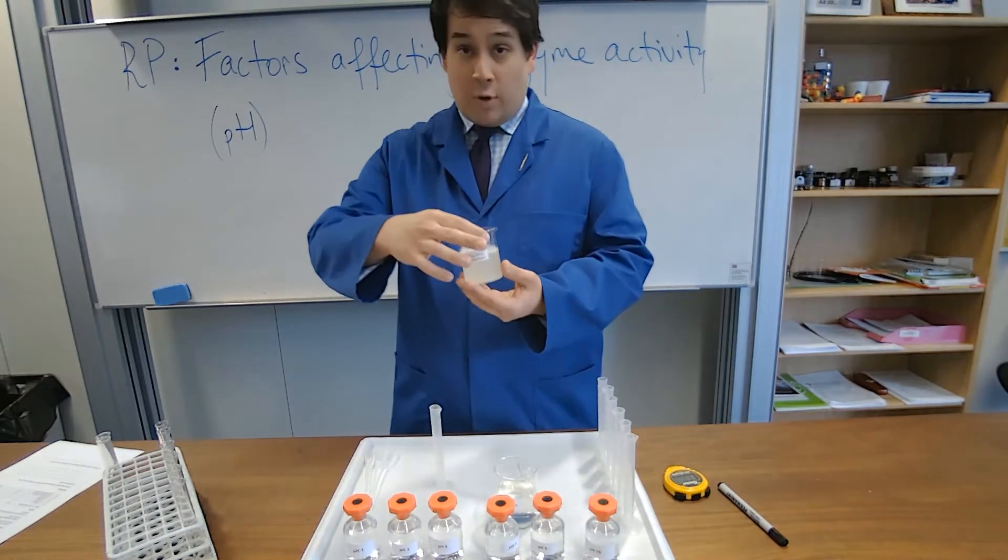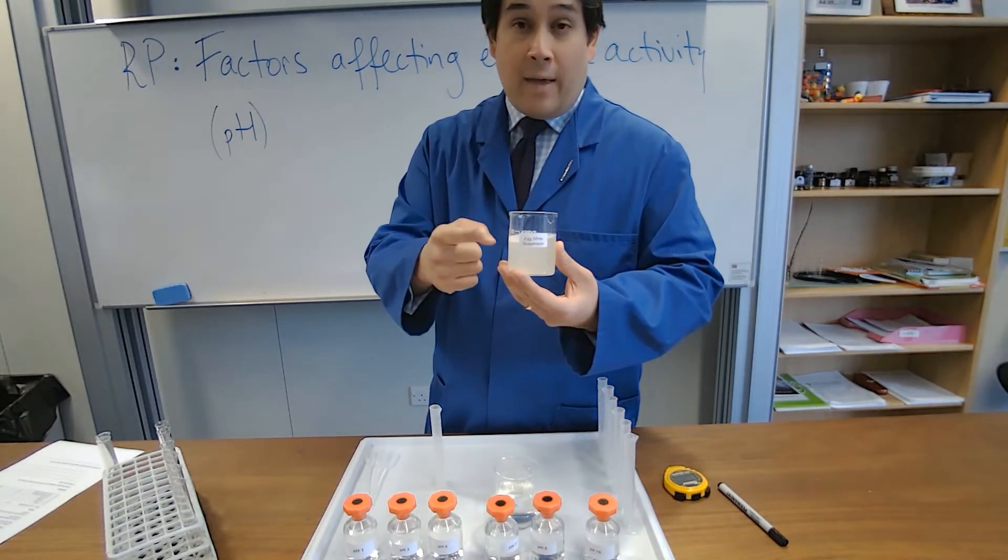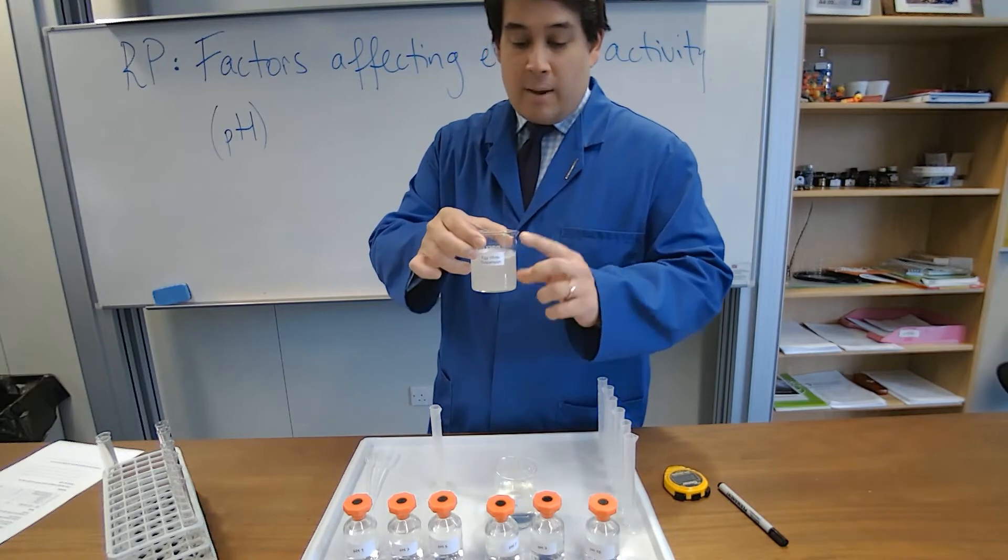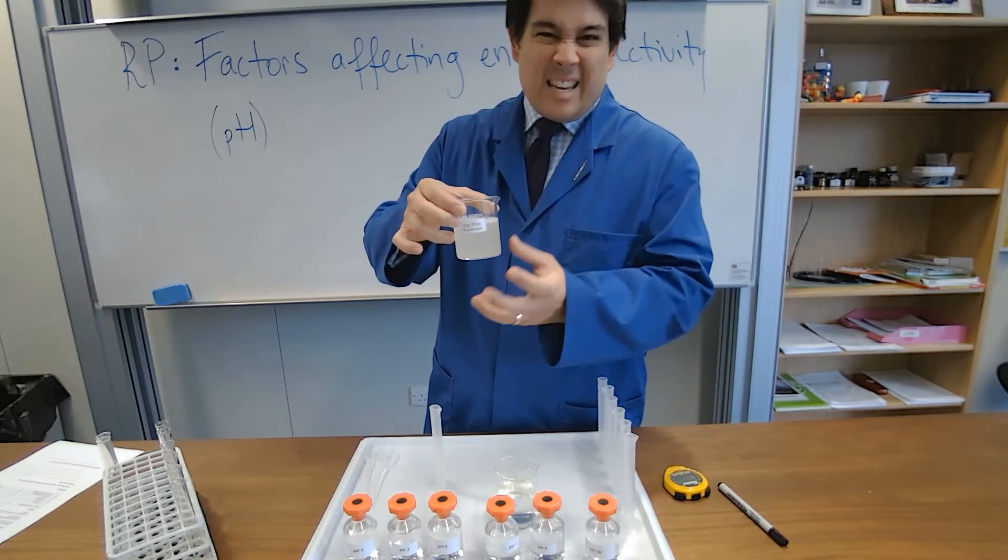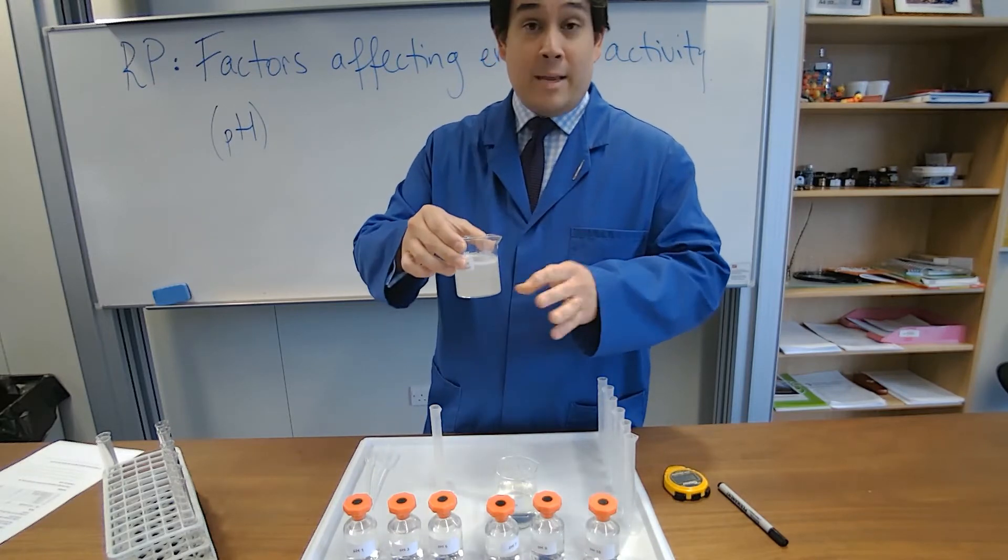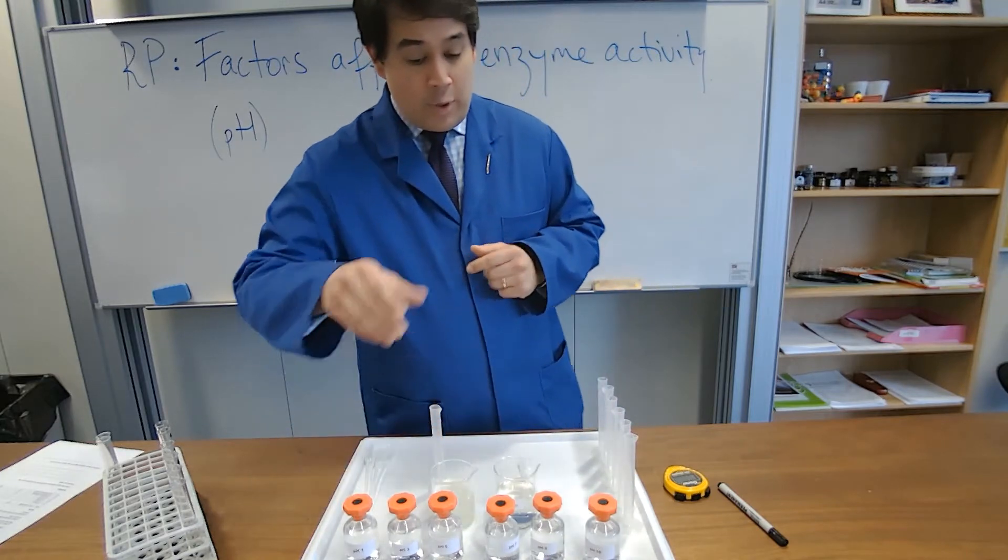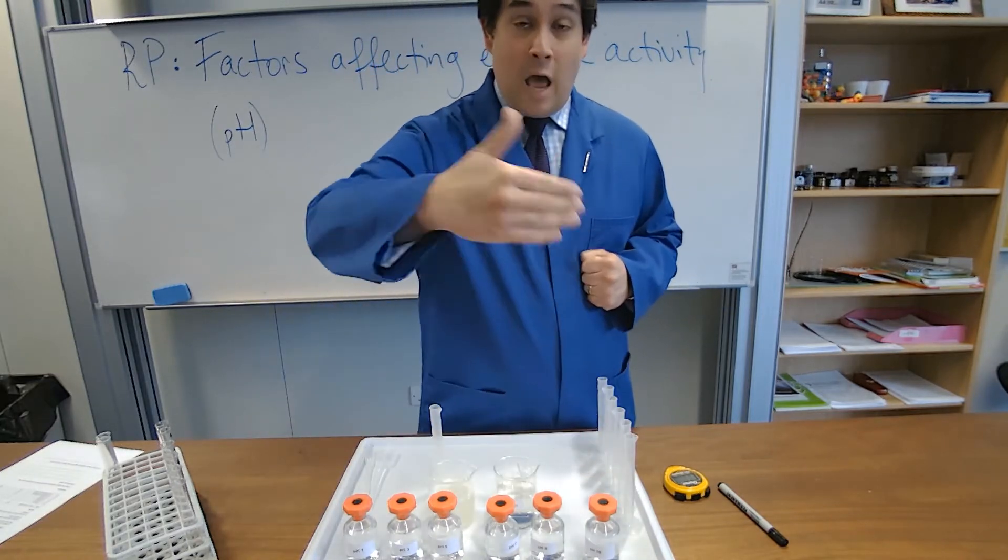Its substrate, so remember the thing that goes into the enzyme, is called albumin and that is egg white protein. Basically we can see it easily when it's broken down, so from this cloudy sort of color it turns clear, and that means pepsin has digested it all. So we're looking at that at different pHs and how it will work.